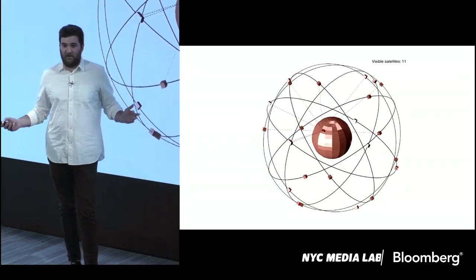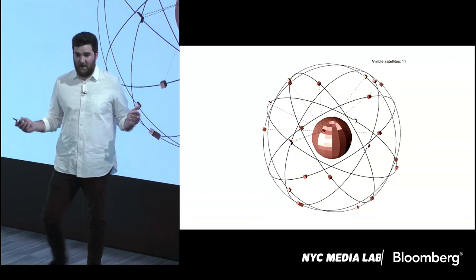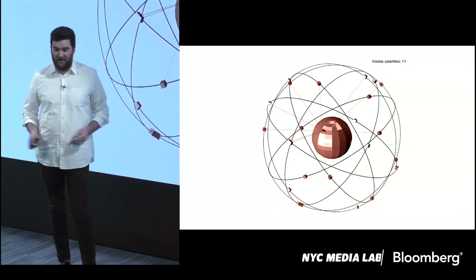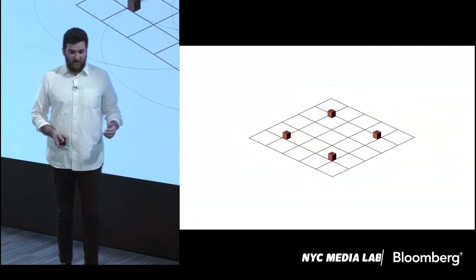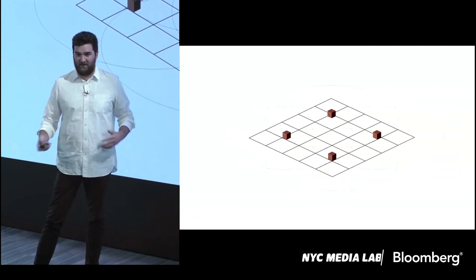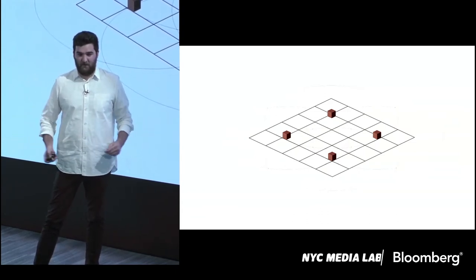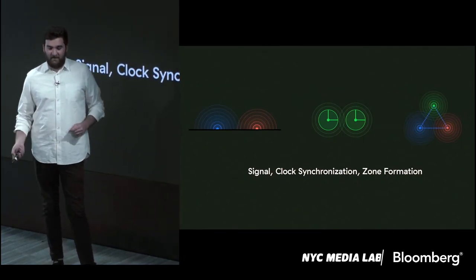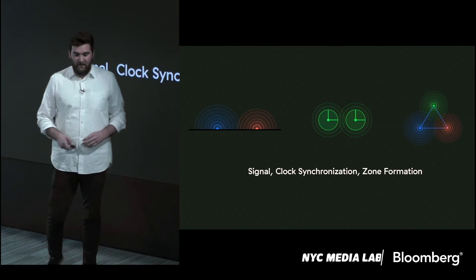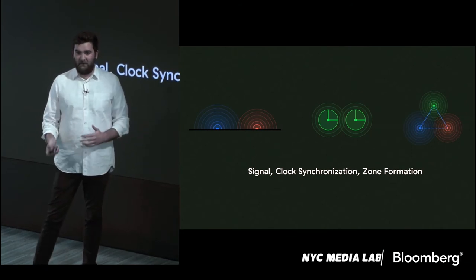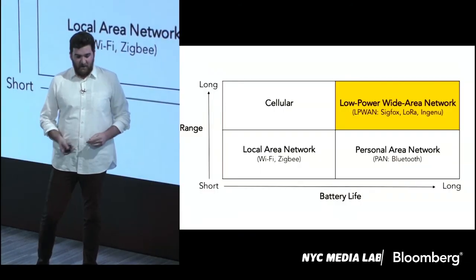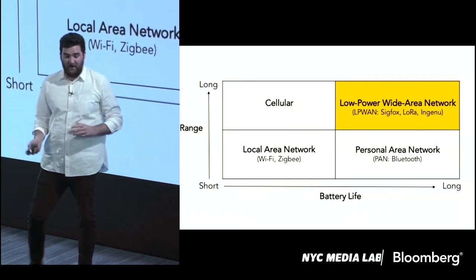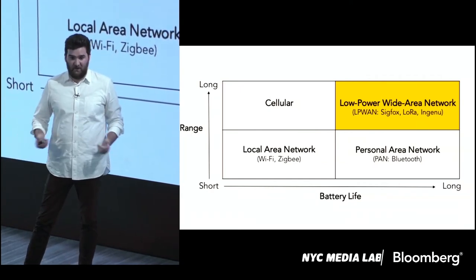GPS currently works by needing four satellites overhead — X, Y, Z, and a fourth for time. Sometimes it takes your phone a few seconds to figure it out. Ours would work in the same way, where you have low power radio devices around the city, and at least four can form what we call a zone. People are incentivized to run these beacons in their homes because they can earn money. They synchronize their clocks with each other and form what we call a zone of coverage. This is a new class of radio that's only a few years old, designed for IoT devices with long range and long battery life.